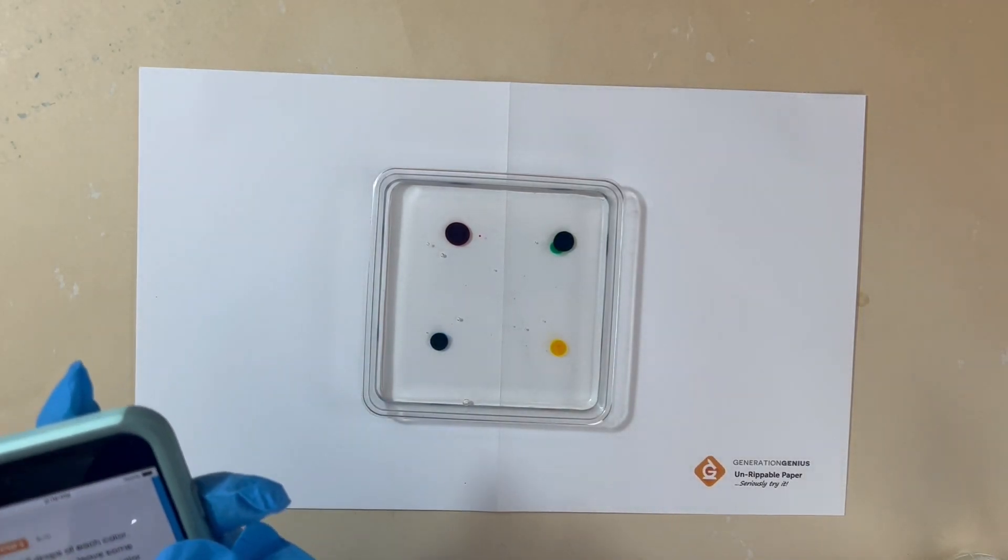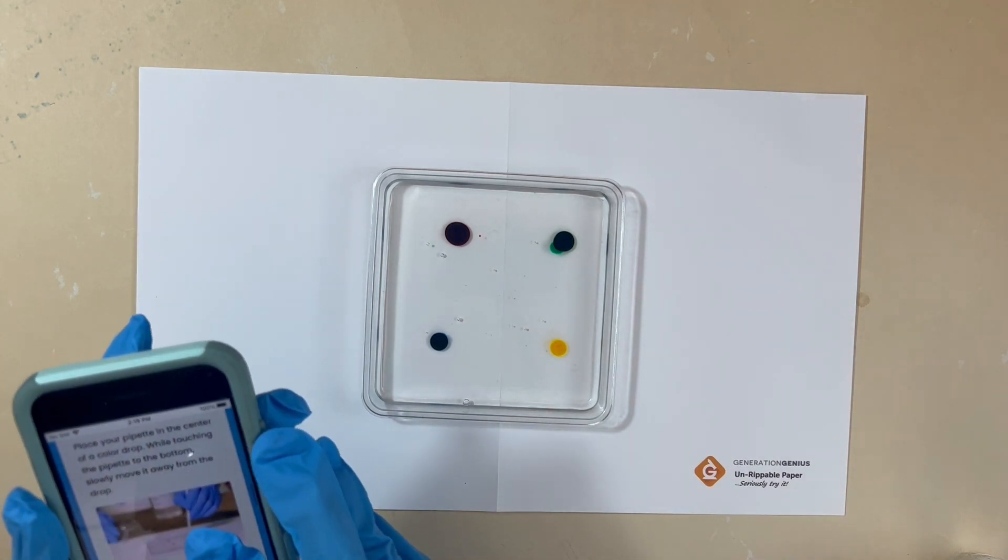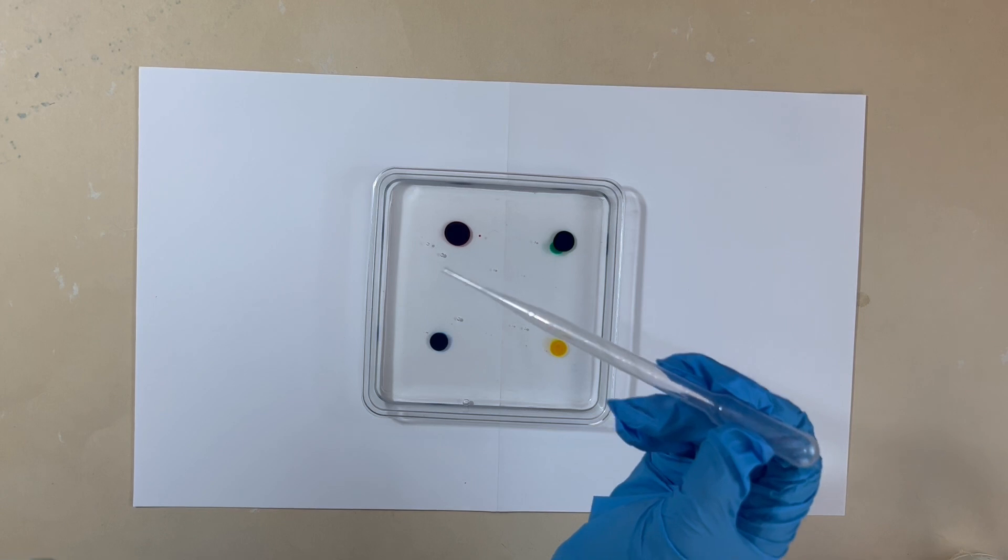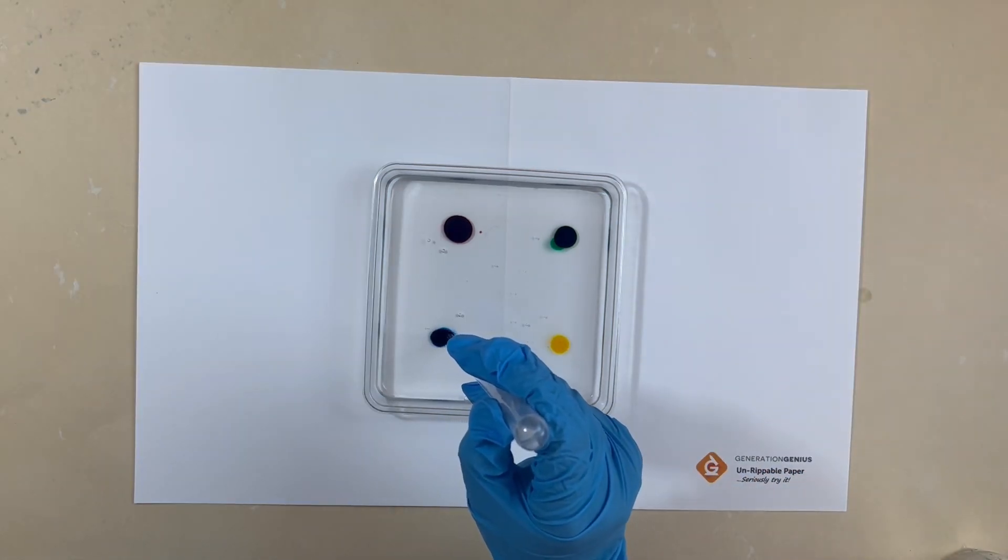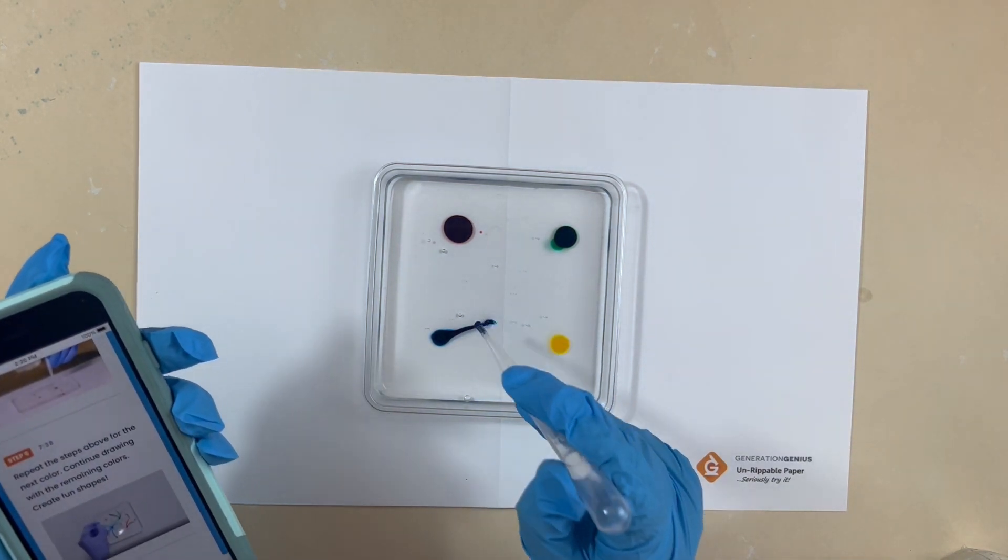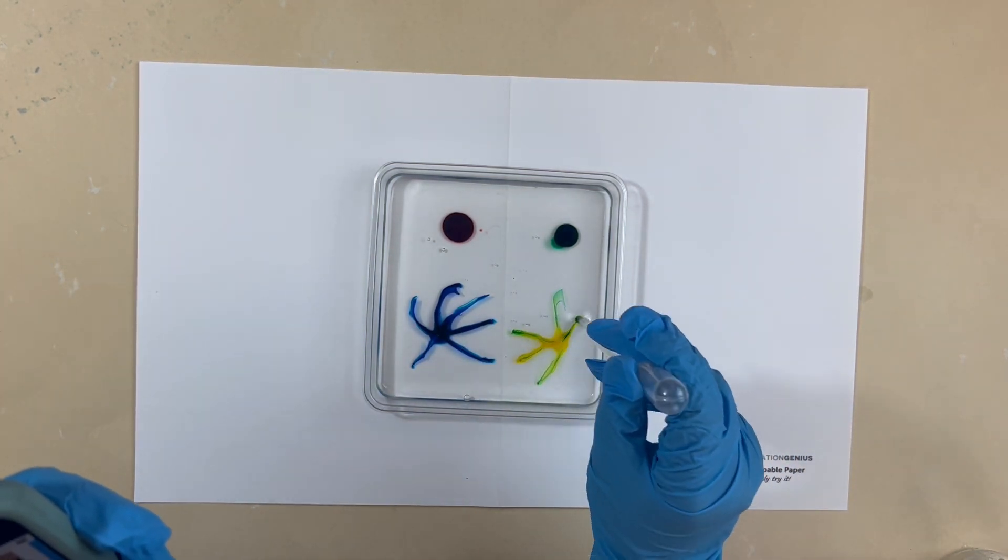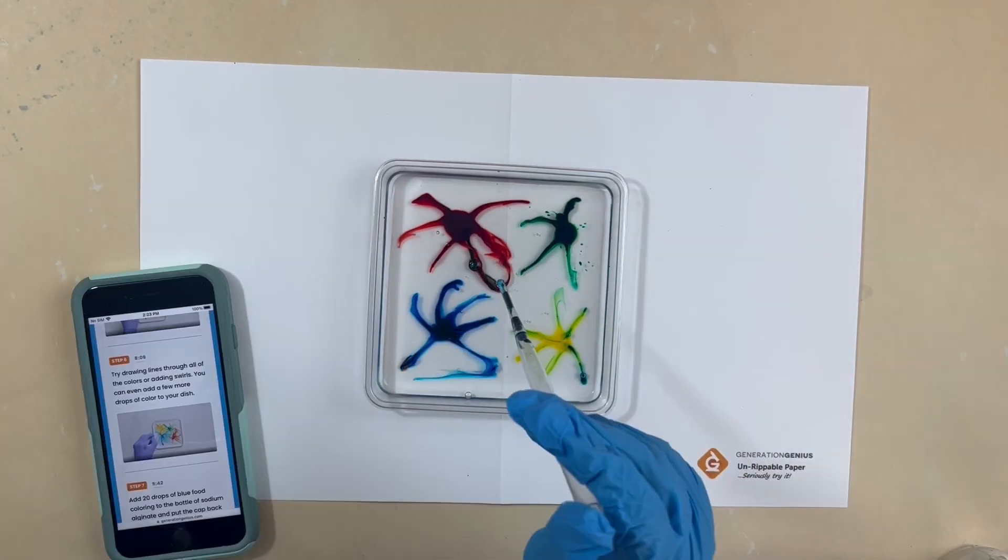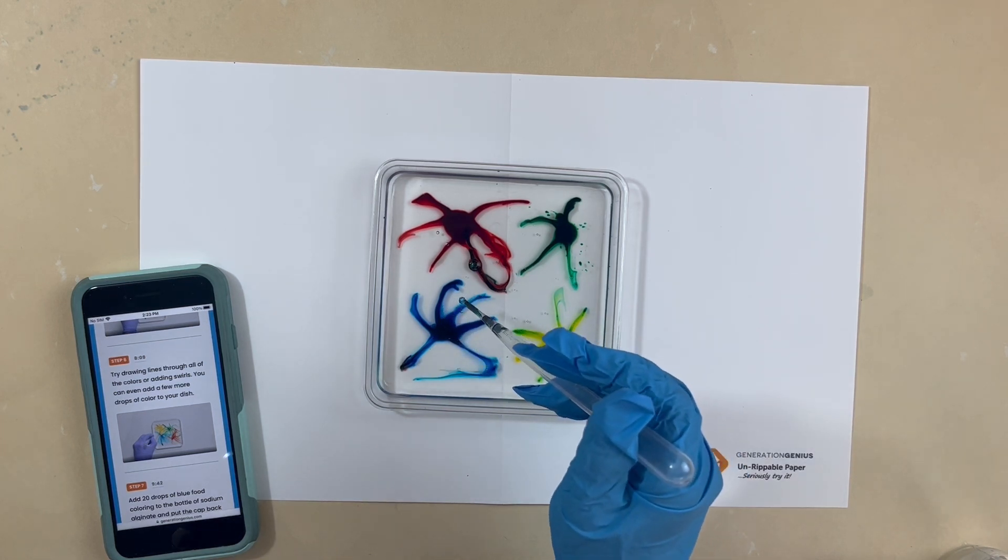Step three says add three drops of each color. Remember to leave some space between each color. One, two, three. Step four, it says place your pipette in the center of a color drop while touching the pipette to the bottom. Slowly move it away from the drop. Step six, try drawing lines through all the colors, adding swirls. You can even add a few drops of color to your dish.